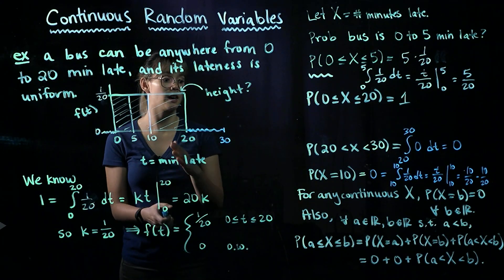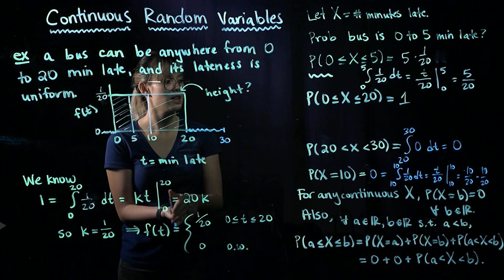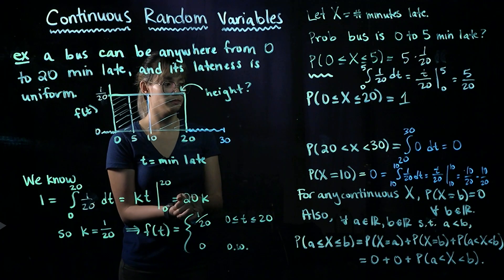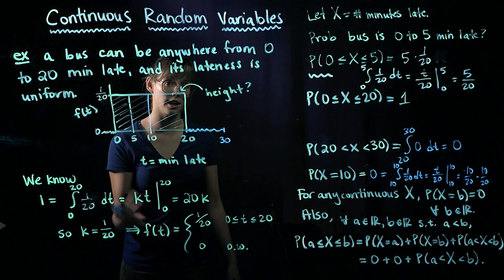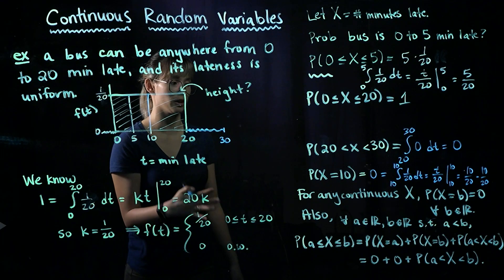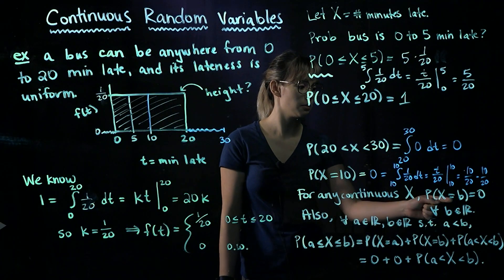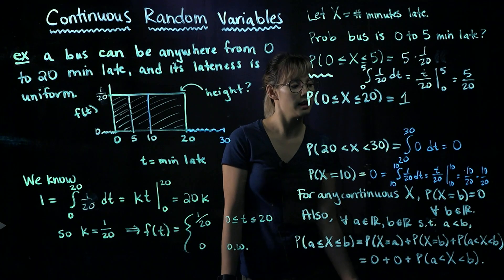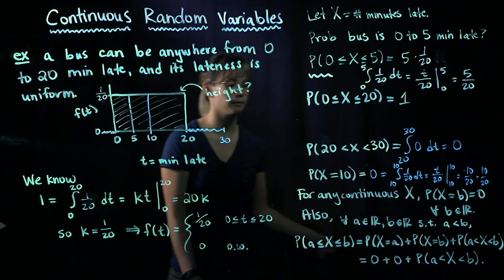The probability that a bus is exactly 10 minutes late is 0. We can generalize this: for any continuous random variable, the probability that it equals any specific real number is 0.